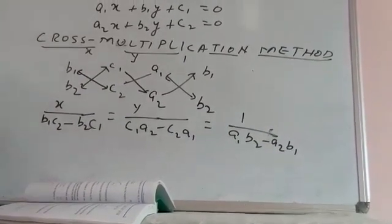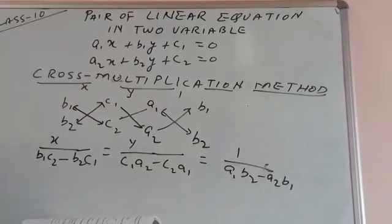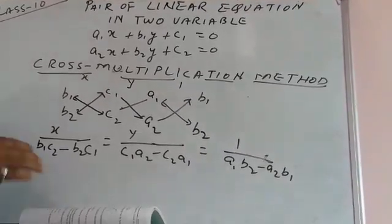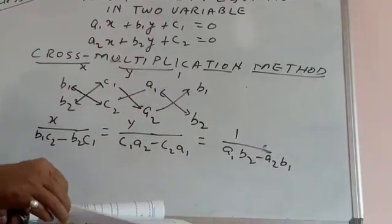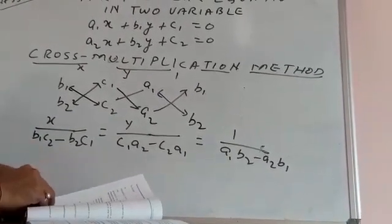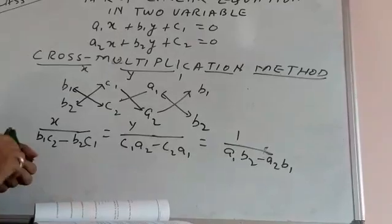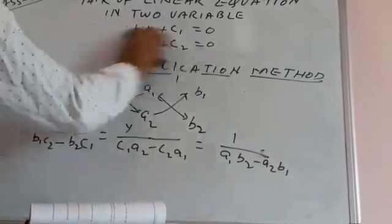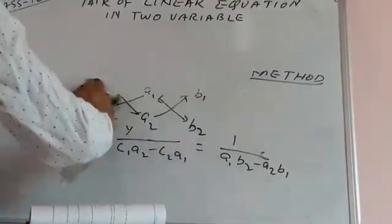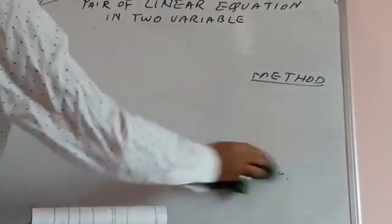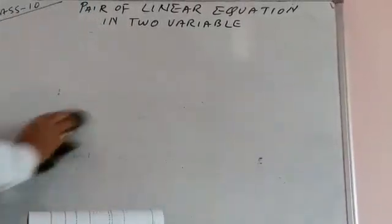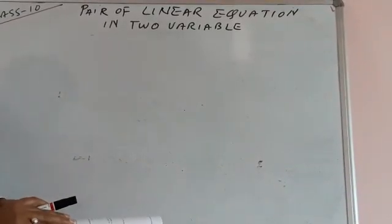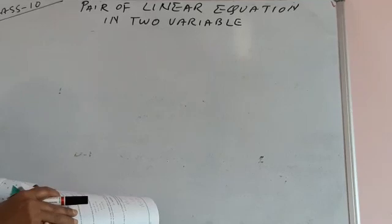This is the formula — simply using the coefficients, this is the way to find the solution using the cross multiplication method. To become confident with this, we will do a few questions from Exercise 3.5, which will help you understand in a better way.